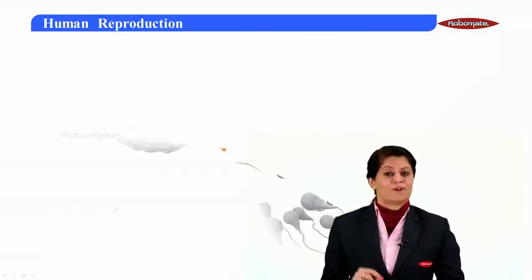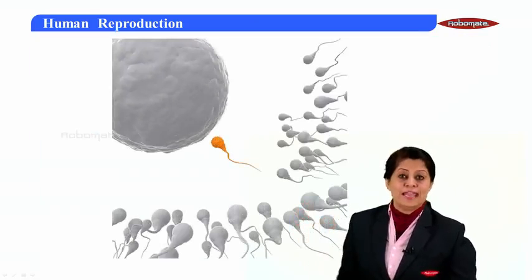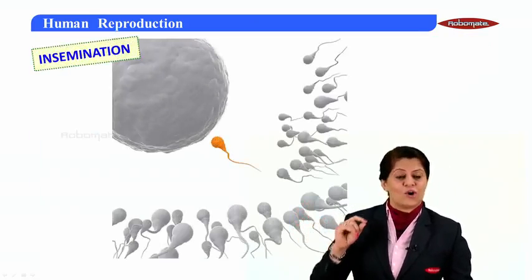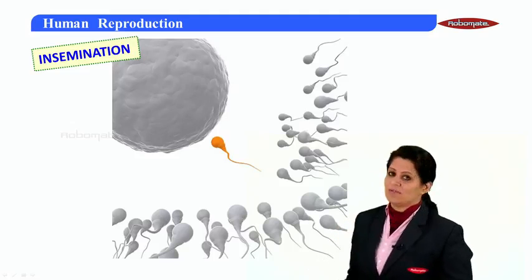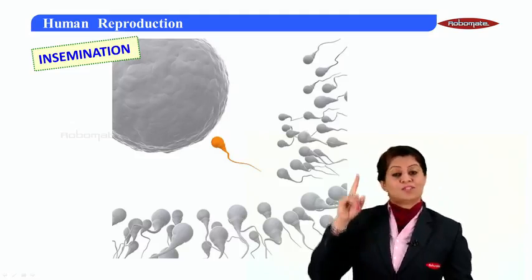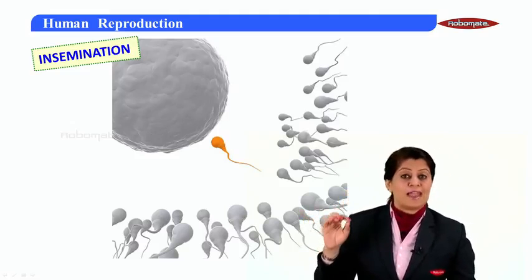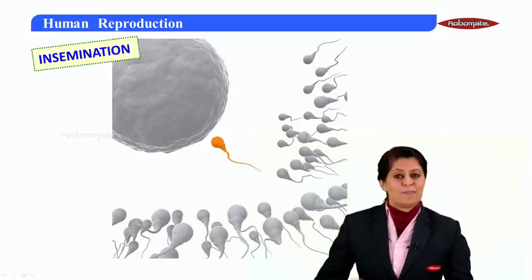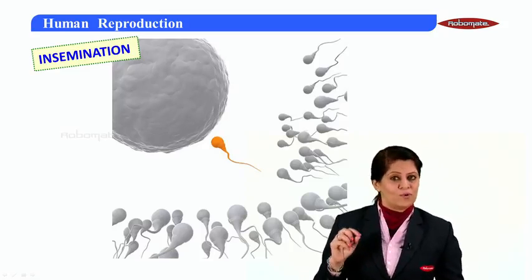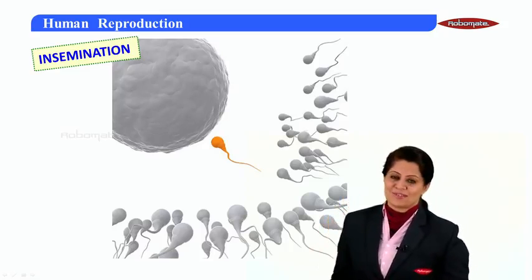When we talk about fertilization, millions of sperms are released during insemination — that is, the release of semen into the vagina of the female. Around 300 million sperms are released, but only very few are capable of getting close to the egg, and from those few, only one gets to fertilize the egg.